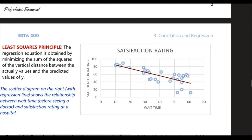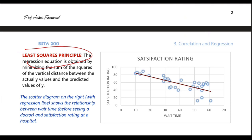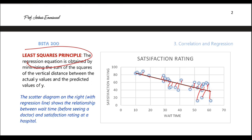It's also called the least squares line, and it uses what we call the least squares principle. When we find the distances between the points and the line, the distances below the line will equal the distances above the line. So just like when we calculated variance, we can't just add them all up — we'd get zero. So we square those distances, and the formula or software finds the line that gives us the shortest total distance between the points and the line.